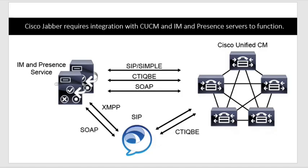Jabber requires integration with CUCM and IM&P servers to function — these are the basic requirements. The IM&P service can be integrated with your CUCM cluster. The protocol used between them for integration is SOAP — Simple Object Access Protocol — as an information exchange protocol.